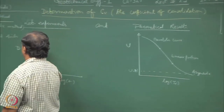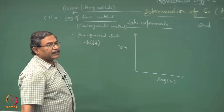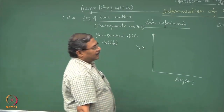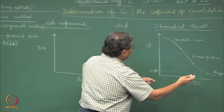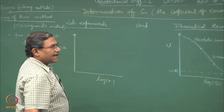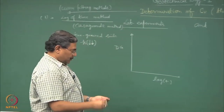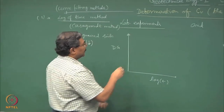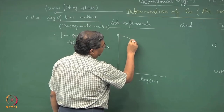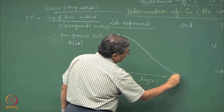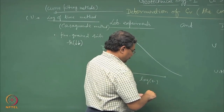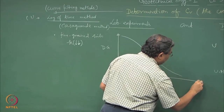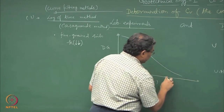What we have to do is take the experimental data from the one-dimensional consolidation test and do curve fitting in such a manner that these three portions get reflected. Please follow a book for whatever I am going to discuss here for clarity of understanding of the figure.